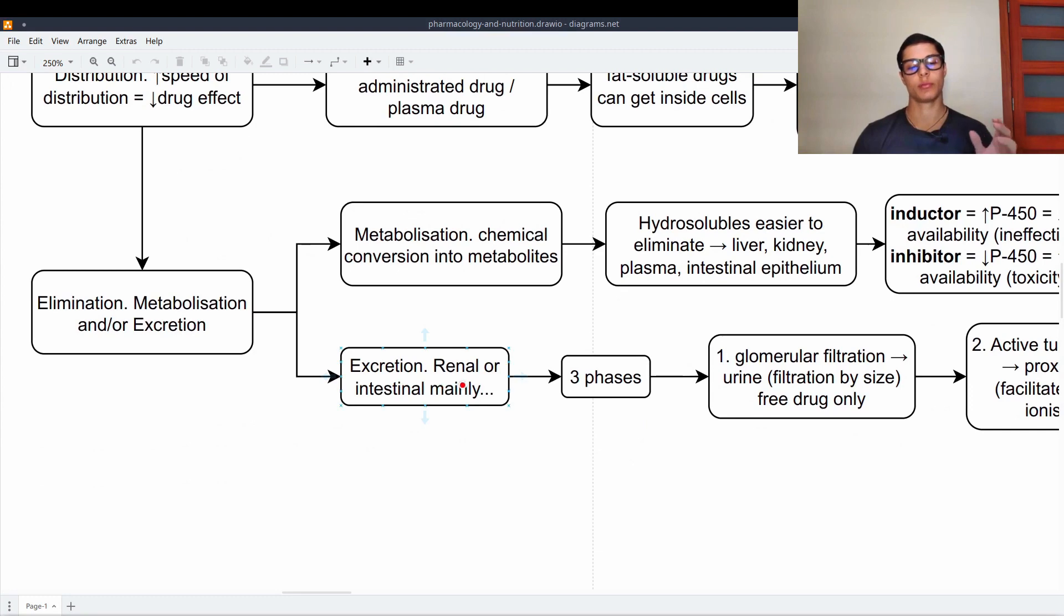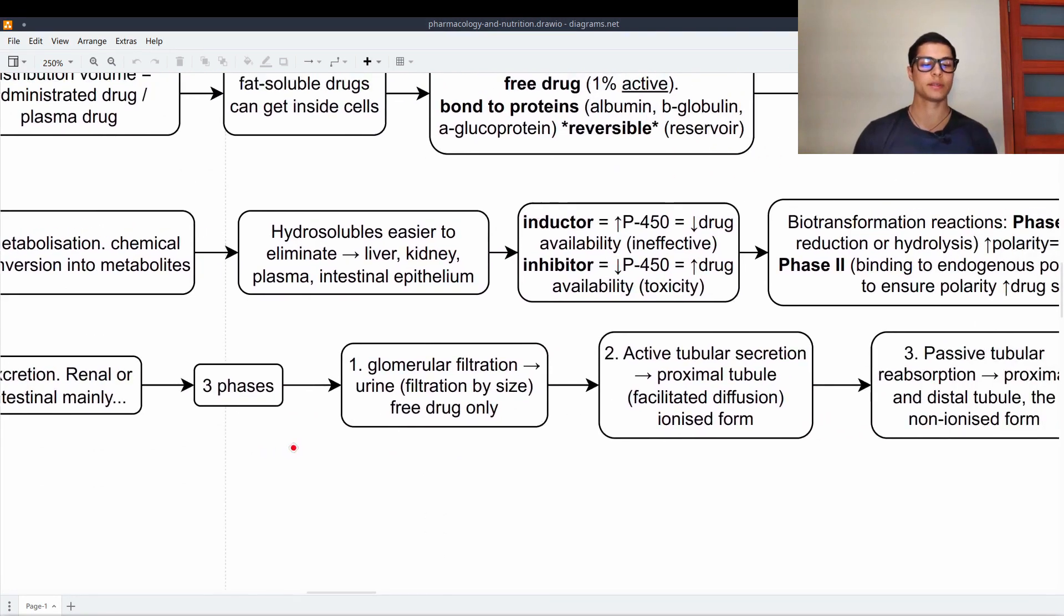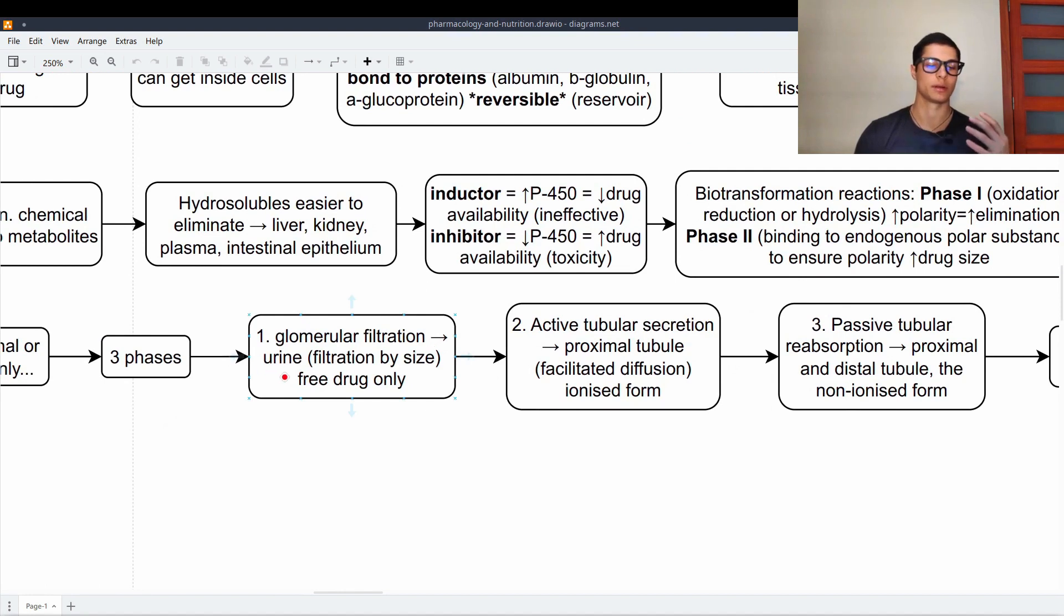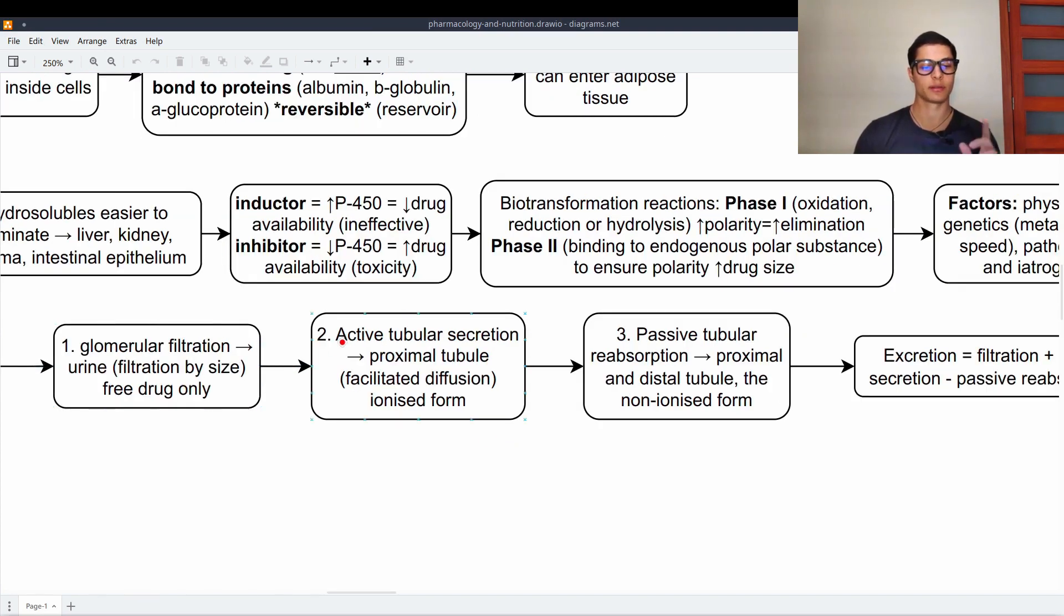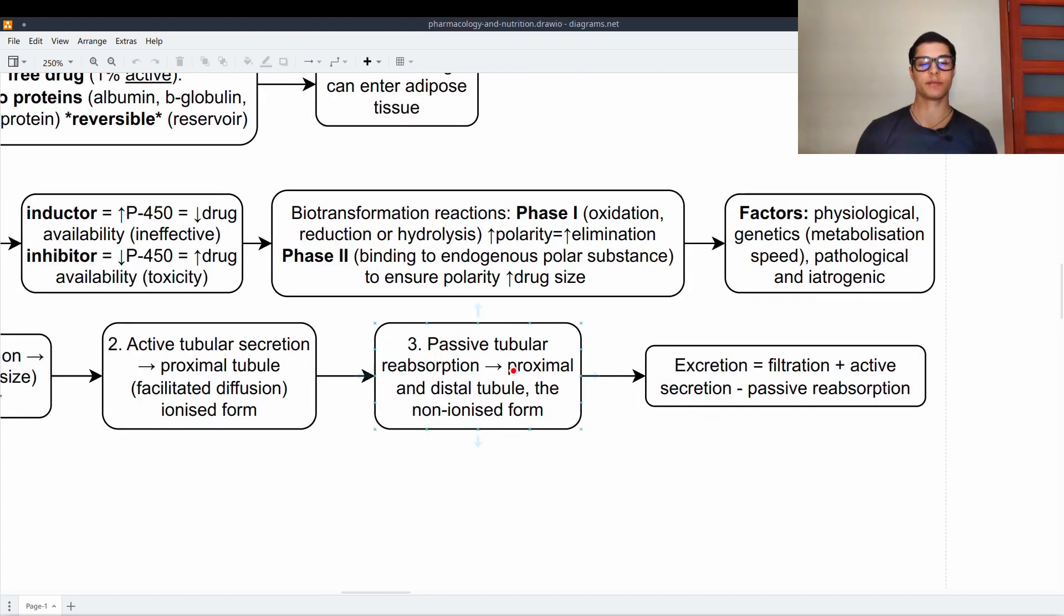Then we have excretion. Can be renal or intestinal, mainly. Three phases. The glomerular filtration, which is basically creation of urine and this happens via filtration by size. This only works for the free drug. Then number two, we have the active tubular secretion. It is a secretion in the proximal tubule and this happens via facilitated diffusion. We filtrate the ionized form. Then passive tubular reabsorption is what happens at the end and in the proximal and distal tubule. And here we treat the non-ionized form.